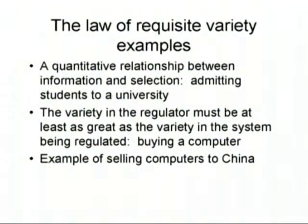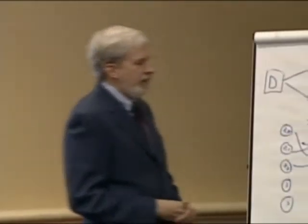The second version of the law of requisite variety concerns the relationship between the regulator and the system being regulated. If you're buying a computer, you estimate the size of the task — how much memory, what speed — and buy a computer at least that big, allowing for growth. It wouldn't make sense to buy a computer smaller than the task. Or if buying a truck, you estimate the load and buy a truck that can hold at least that much. But this is in the informational domain, not in the domain of matter and substances.